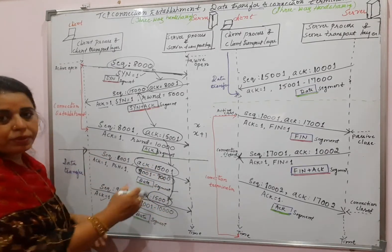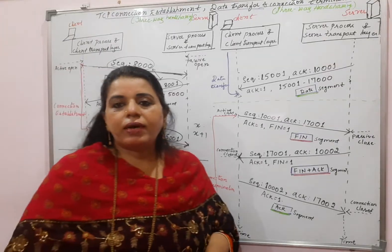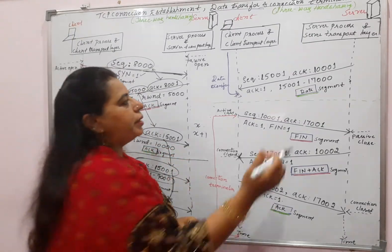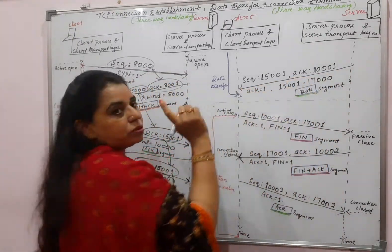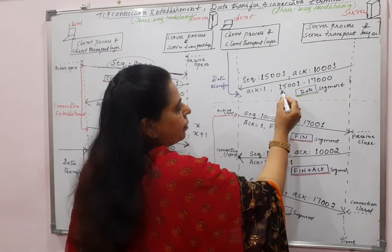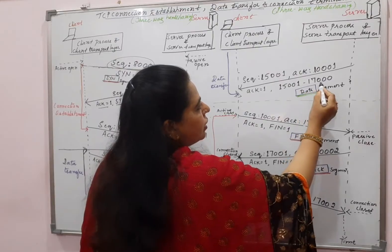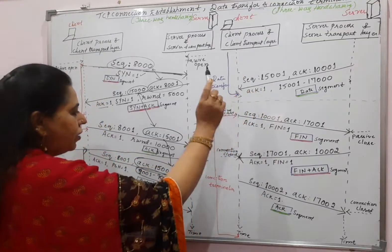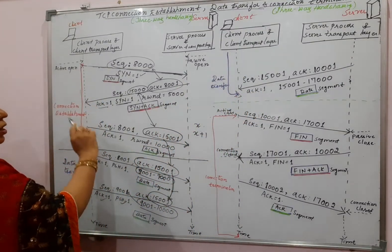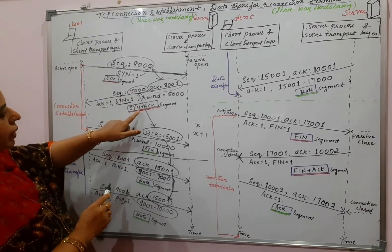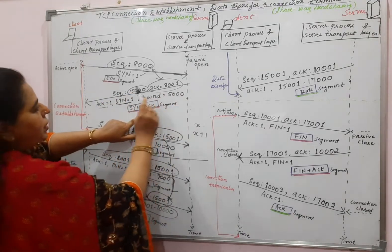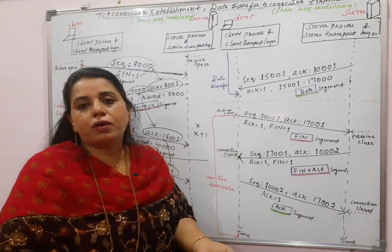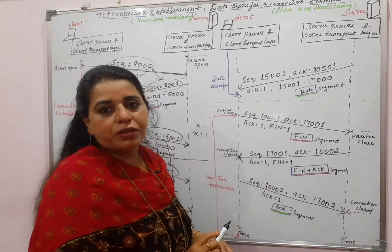After 2000 bytes are sent from the client to the server, the server has decided to send some data — 2000 bytes to the client. That segment is shown here, with a range of 15001 to 17000. The sequence number used is 15001. The sequence number 15000 got consumed during the connection establishment phase from the server side and cannot be reused. That is why the next will be 15001, and it uses sequence number 15001 in the data.